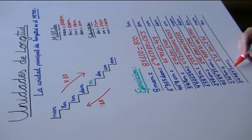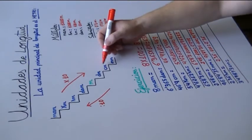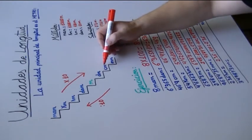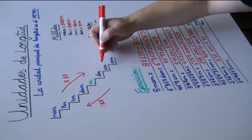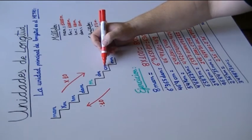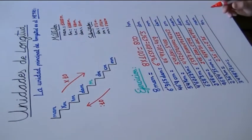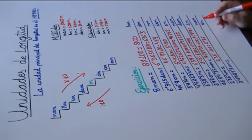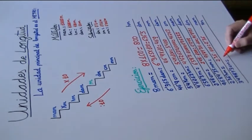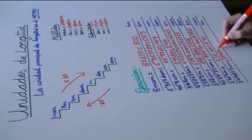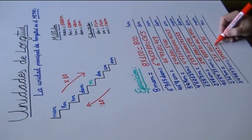34787,3 centímetros los vamos a pasar a kilómetros. De centímetros a kilómetros, ¿cuántos escalones tenemos que subir? 1, 2, 3, 4 y 5. Pues dividimos entre 100.000, porque son cinco ceros. 34787,3 entre 100.000: desplazamos la coma hacia la izquierda cinco cifras.